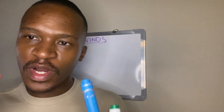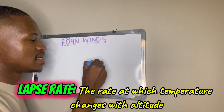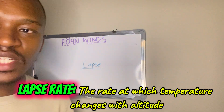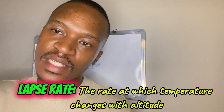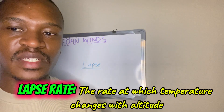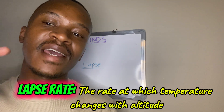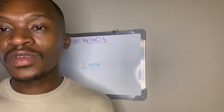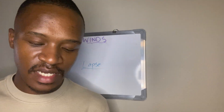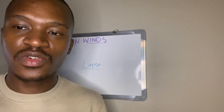We need to know what is lapse rate. Lapse rate refers to the rate of change in temperature as you go higher — the change in temperature with altitude. We know that in the troposphere, the higher you go, the lower the temperature. That's the lapse rate: changes in temperature with altitude.